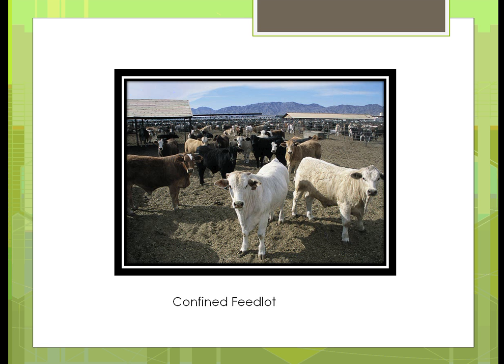Here's an example of a combined feedlot. You can see there isn't any grass there at all — it looks like some type of material, possibly ground-up corn cobs or gravel. It's just an example where the animals are all close together. You don't see as many in the foreground, but back there there's a ton of them together.